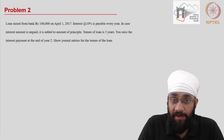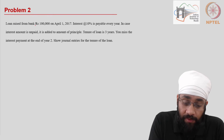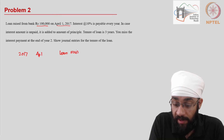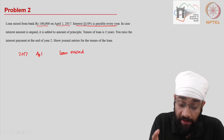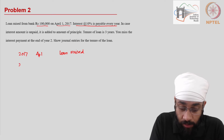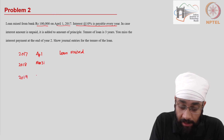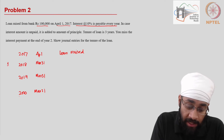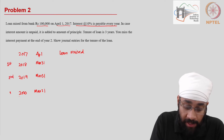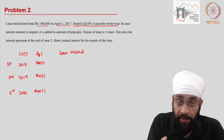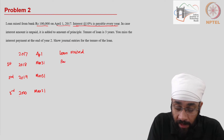Let's look at another practice problem. A loan of 100,000 rupees is raised from a bank on April 1, 2017. I'll write the timeline here: April 1 - loan raised. Interest is payable at the end of every year, so the first year ends March 31, 2018, the second year March 31, 2019, and the third year March 31, 2020. Since interest is payable at the end of every year, a financial transaction takes place each time interest is paid.